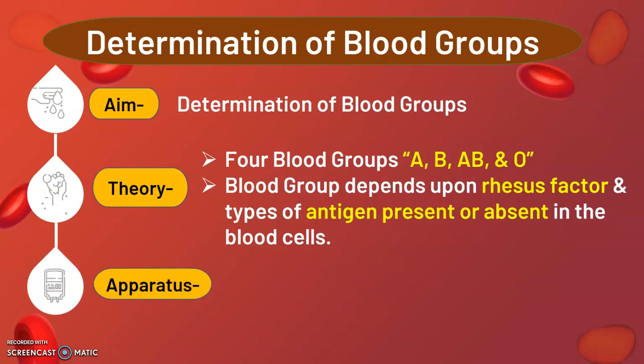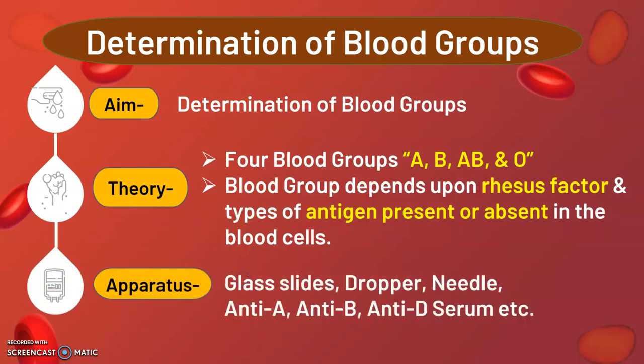Let us discuss what apparatus are required for this practical. Before starting, you must have: glass slides, a dropper to add the antiserum, a needle for pricking, cotton along with spirit, and an ABD kit. The ABD kit is for detection of blood group. The antisera required are anti-serum A, anti-serum B, and anti-serum D.